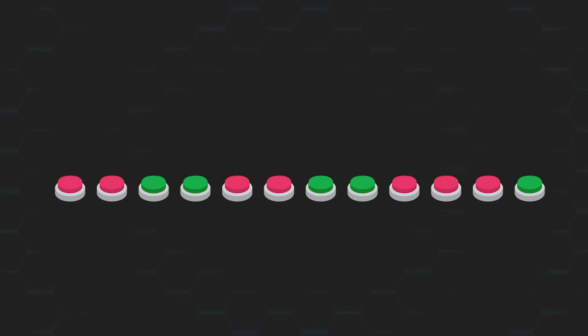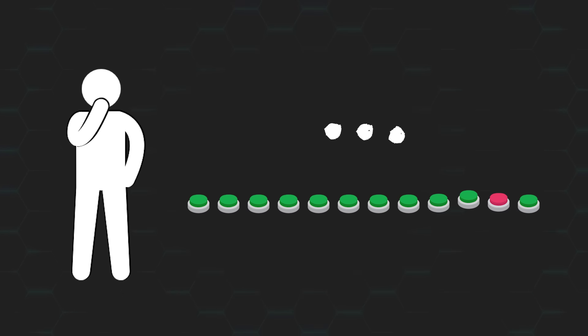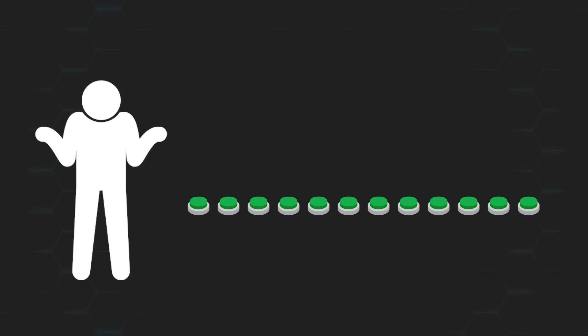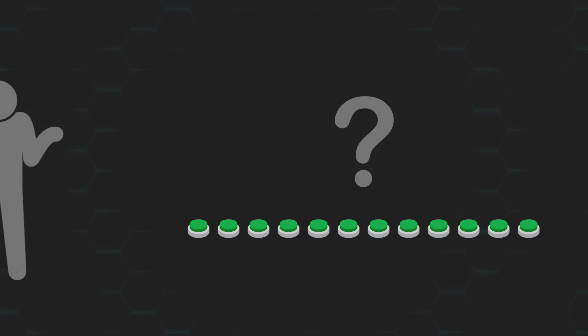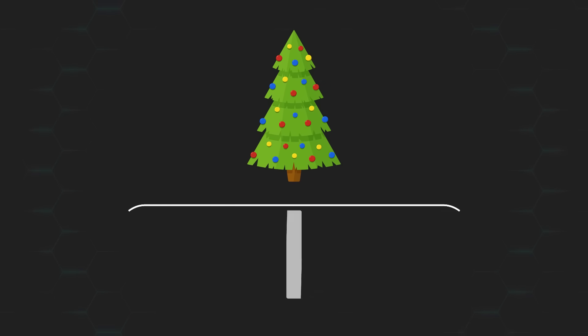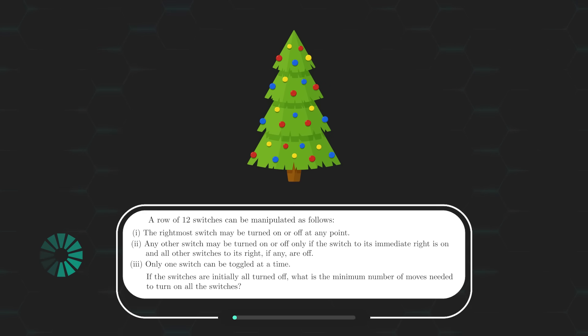Now, based on these restrictions, you realize that turning on all the switches might not be an impossible task. So the question is, if it is in fact possible, what is the minimum number of moves needed to solve the puzzle and turn on all the switches? Keep in mind that the switches are initially all turned off, and only one switch can be toggled at a time. Here's your chance to pause the video, if you'd like to give it a shot before we go through it together. And yes, it is too late to go back out there to buy a new set of lights.